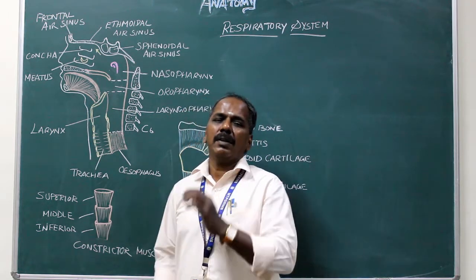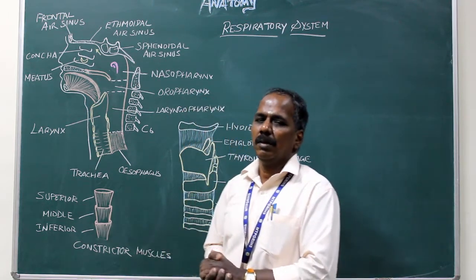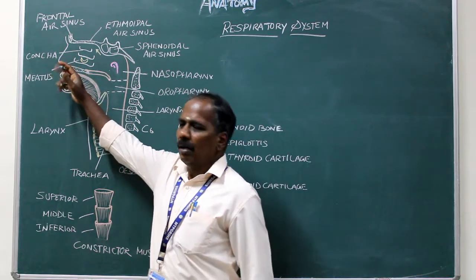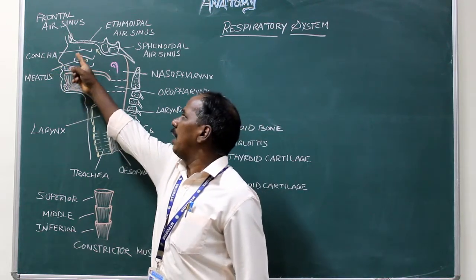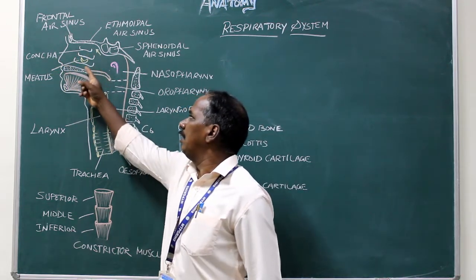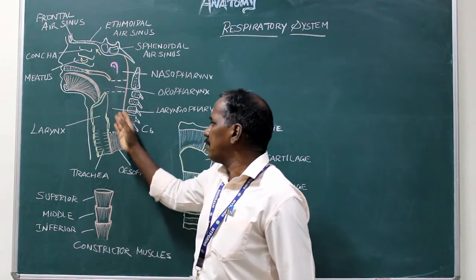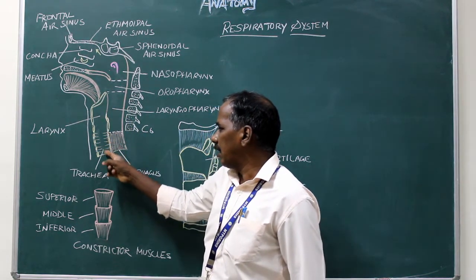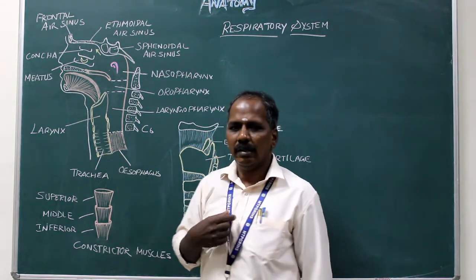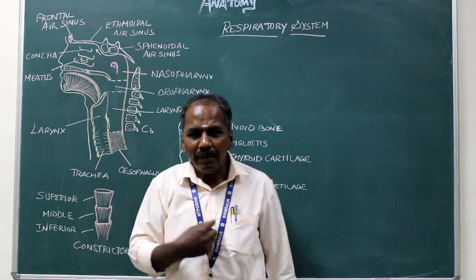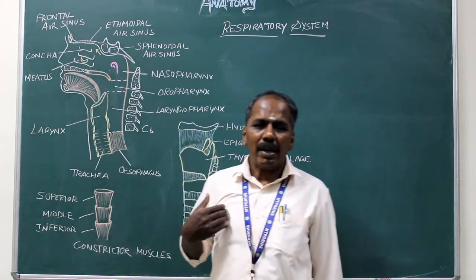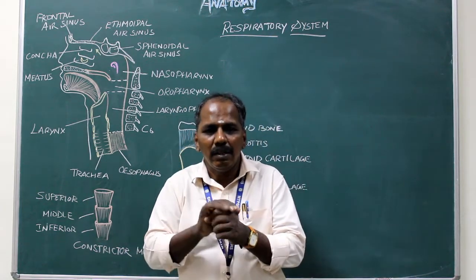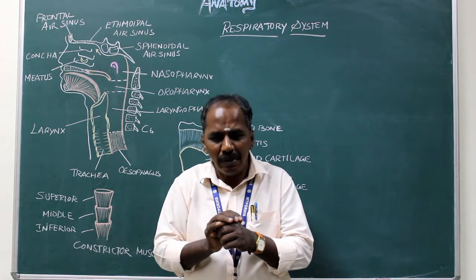Parts of the Respiratory System: 1. Nose, 2. Nasal cavity, 3. Pharynx, 4. Larynx, 5. Trachea, 6. Right and left bronchi, 7. Right and left lungs, 8. And its covering, 9. That is pleura.